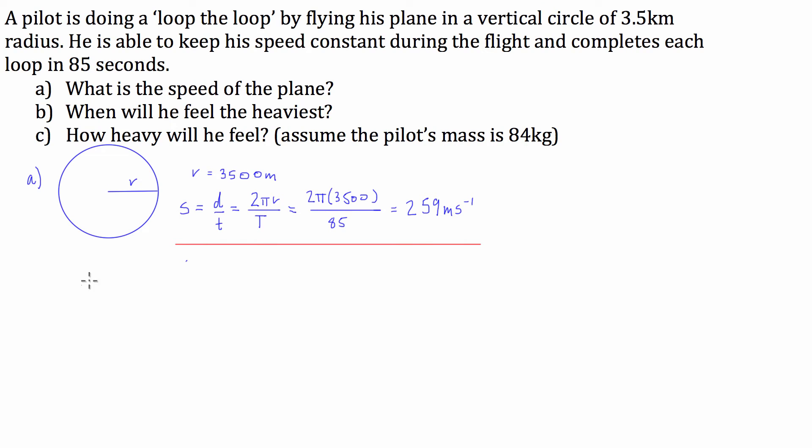On to part B. Now, we are asked when he will feel the heaviest. When he will feel the heaviest in this loop is when the force due to his centripetal acceleration and the force due to gravity are adding together. So when we have the force due to centripetal acceleration is being added to the force due to gravity. Now, this occurs at the bottom of the loop.